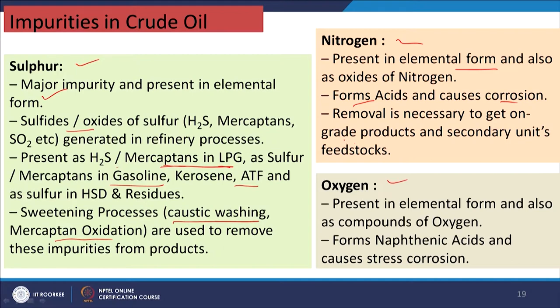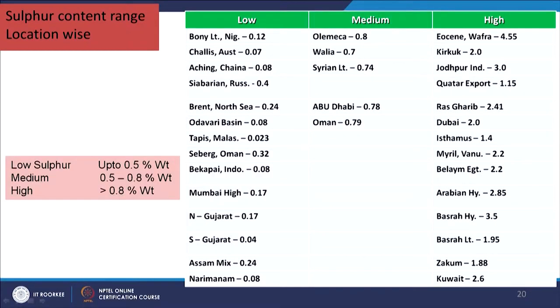Removal of nitrogen is important to obtain on-grade products and quality feedstocks for catalytic processing. Oxygen is present in elemental form and as compounds — it forms naphthenic acid and causes stress corrosion. Sulphur content may vary: low sulphur is up to 0.5%, medium is 0.5–0.8%, and high is greater than 0.8%. Different crude oils have different sulphur contents ranging from low to high.